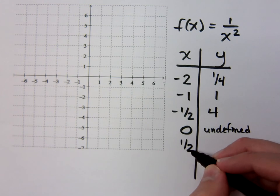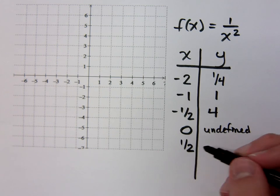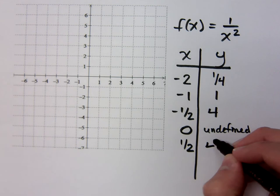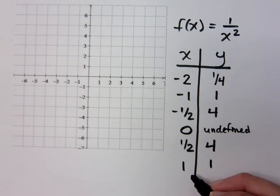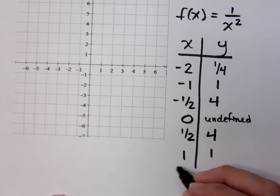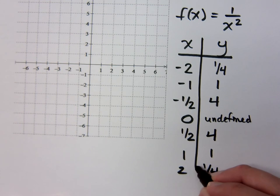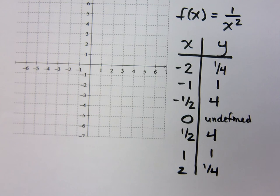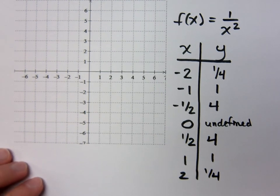What about the rest of these? I plug in 1 half, I'm going to get 4. If I plug in 1, I get 1. And then if I plug in 2, I get 1 fourth. Okay. Now let's plot these points and make sure everything lines up well.